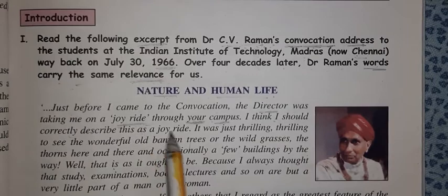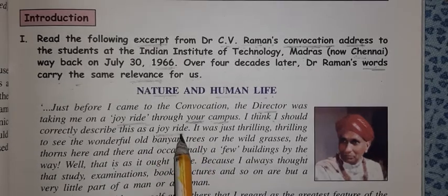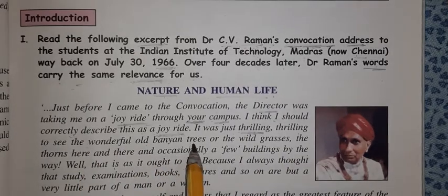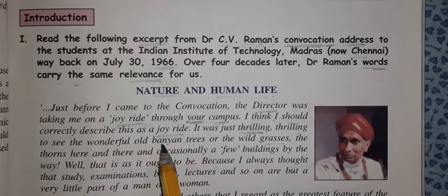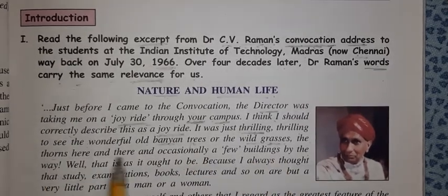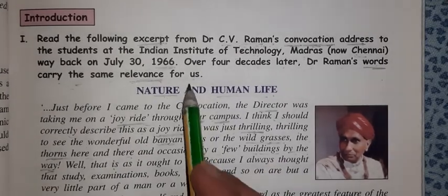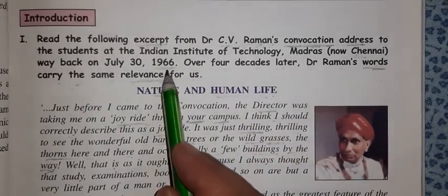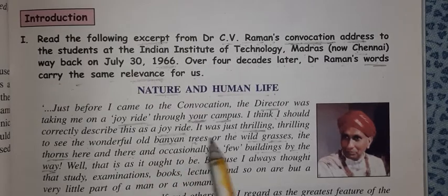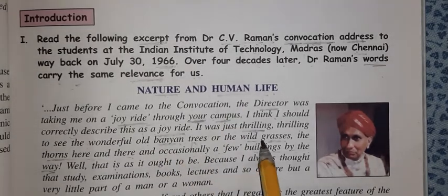I think I should correctly describe this as a joy ride — a joy ride is where we enjoy seeing a place and feel happy. He says 'joy ride' is the right word. It was just thrilling — thrilling means very exciting, full of enthusiasm — to see the wonderful old banyan trees, the wild grasses, the thorns here and there, and occasionally a few buildings by the way. This was the IIT Chennai campus in 1966 — at that time it was not so developed, so all these nature-related things were visible.